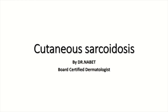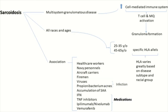Hello everyone, I'm Dr. Nabetriye, a dermatologist. Today I want to talk about cutaneous sarcoidosis. Sarcoidosis is a multi-system granulomatous disease affecting all races and ages, but mainly those between ages 25-35 and 45-65. It is characterized by increased cell-mediated immunity, mainly T cells and macrophages, that ultimately results in granuloma formation.